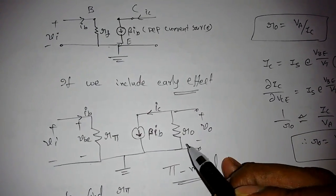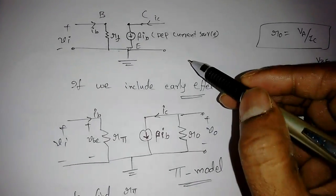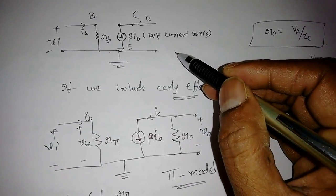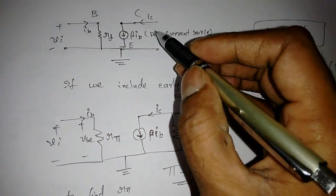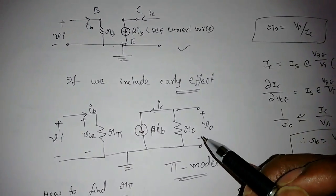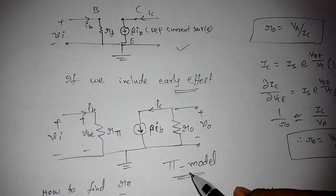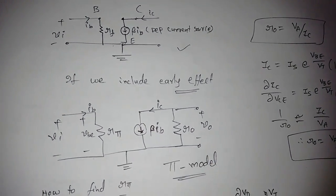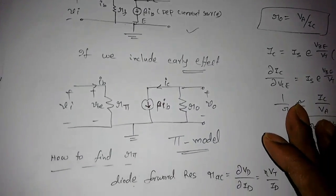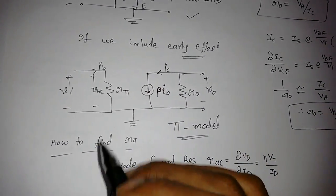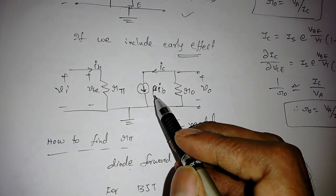If we include the Early effect, we need to add the output resistance r0 to the small signal model. If we neglect the Early effect, we can neglect r0. Including the Early effect means including r0 — this gives us the complete pi model for the common emitter configuration.